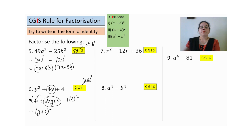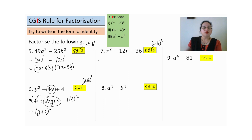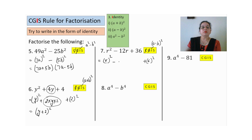Seventh sum — common not possible, grouping not possible, go for identity. Three terms, middle term is negative, so we use (a-b)². First term: r whole square. Last term: 6 whole square. Middle term should be 2 × r × 6 = 12r. Check — same. So the identity is (r-6)².